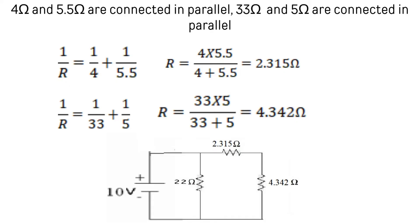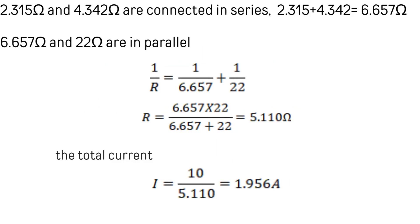We can redraw the circuit again. From observation, 2.315 ohms and 4.342 ohms are connected in series, so total resistance is 2.315 plus 4.342 equals 6.657 ohms. Then 6.657 ohms and 22 ohms are connected in parallel: R equals (6.657 × 22)/(6.657 + 22) = 5.110 ohms. Therefore total current I equals V/R = 10/5.110 = 1.956 amperes.